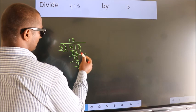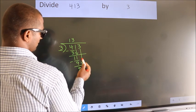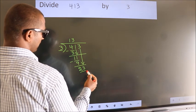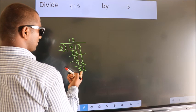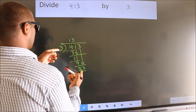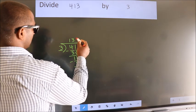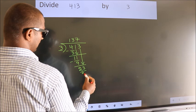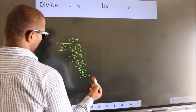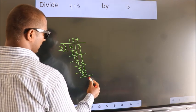After this bring down the beside number. So 3 down. So 23. A number close to 23 in 3 table is 3 7s 21. Now we subtract. We get 2.